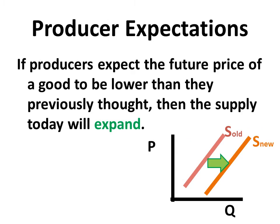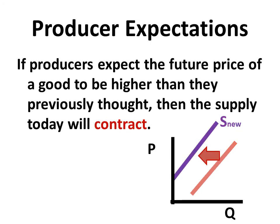We can also think about how producer expectations might affect the supply curve. If producers expect the future price of a good to be lower than they previously thought, then the supply curve today will actually expand. This is because if they think the future price will be lower, they won't make as much profit waiting to sell it, so they'll go ahead and try to sell it today. Thus, that extra sales today expands the supply curve.